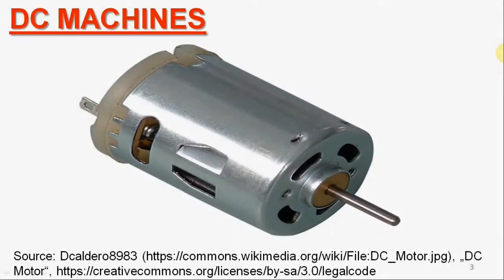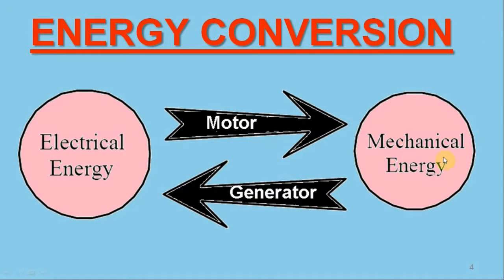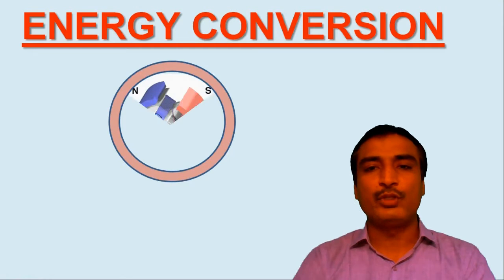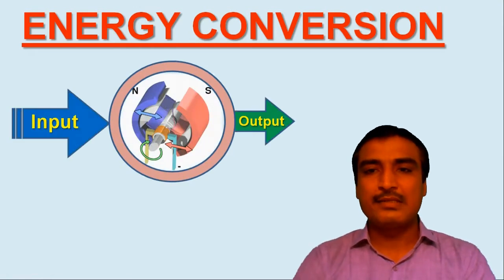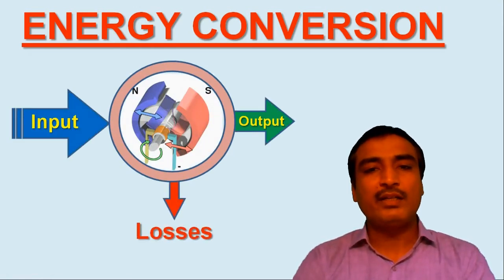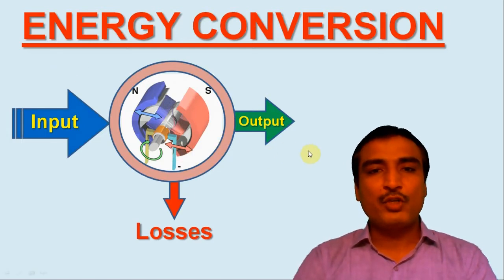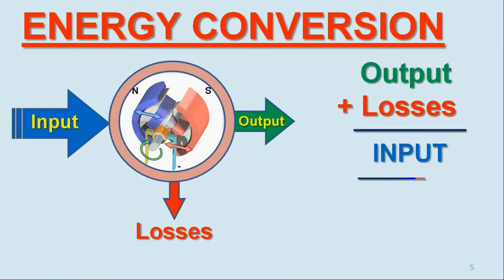A DC machine can be operated either as a generator or as a motor, and it is decided by the input to the machine — whether it is mechanical power input or electrical power input. However, it is impossible to convert 100% of the power input into output, since various losses occur in different components of the DC machine. Due to the law of conservation of energy, the input power must always be equal to the output power plus the losses occurring in the DC machine.